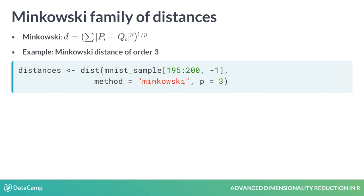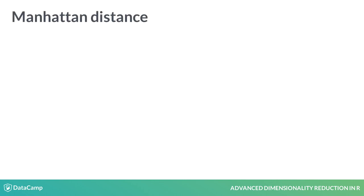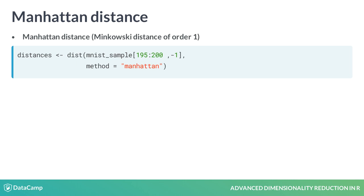In R, we can compute these metrics using the dist function. This code shows how we compute the Minkowski distance of order three. The Manhattan distance computes the distance that would be traveled to get from one data point to another if a grid-like path is followed.